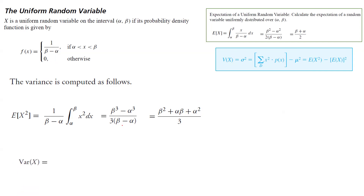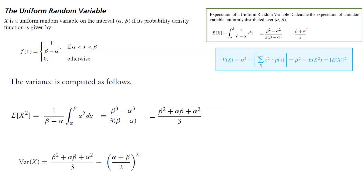To calculate the variance, we take the expected value of x squared minus the expected value of x to the second power, which is beta plus alpha divided by 2, squared. After algebra, this gives alpha squared plus beta squared minus 2 alpha beta divided by 12, which simplifies to beta minus alpha, squared, divided by 12. For a uniform random variable we have the PDF, CDF, expected value, and variance. To find the standard deviation, simply take the square root of the variance.